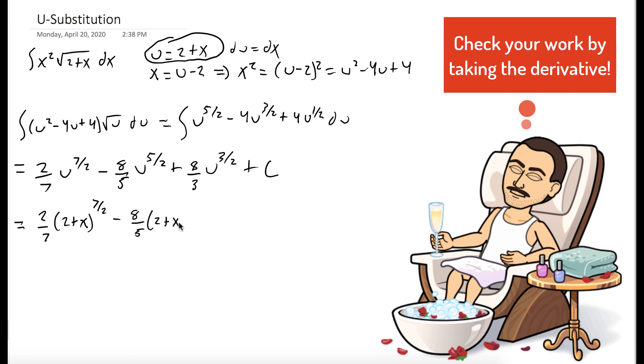And that's it. So we have 2 sevenths 2 plus x to the 7 halves minus 8 fifths 2 plus x to the 5 halves plus 8 thirds times 2 plus x to the 3 halves plus c.